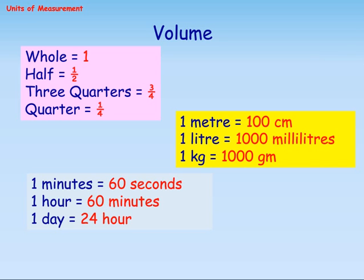Key conversions: 1 meter equals 100 cm, 1 litre equals 1,000 ml, 1 kg equals 1,000 g, 1 minute equals 60 seconds, 1 hour equals 60 minutes, 1 day equals 24 hours.